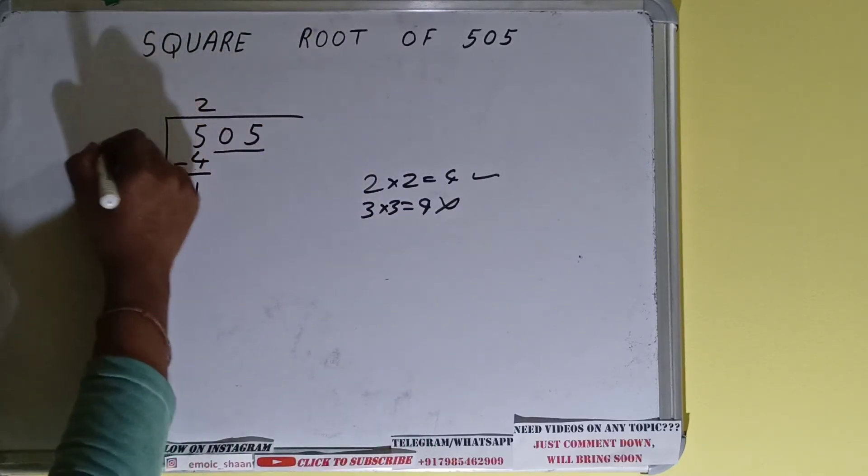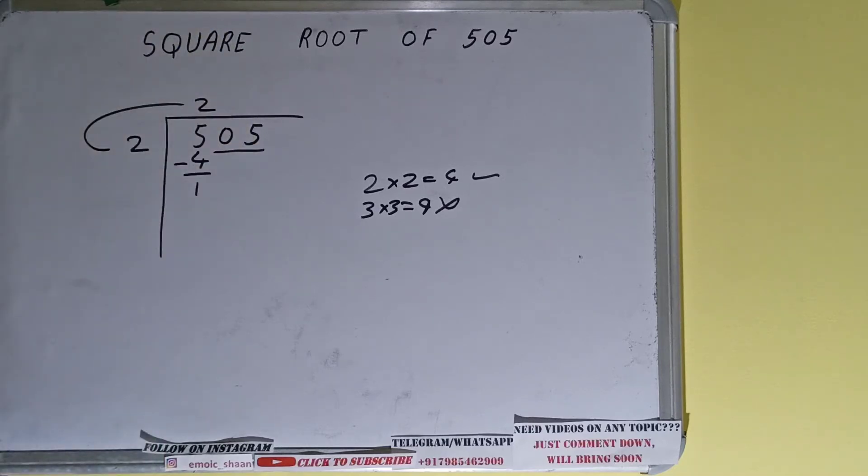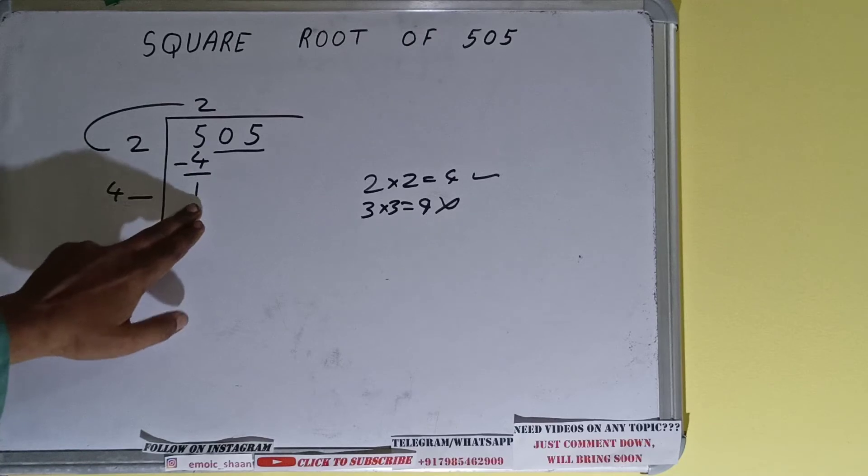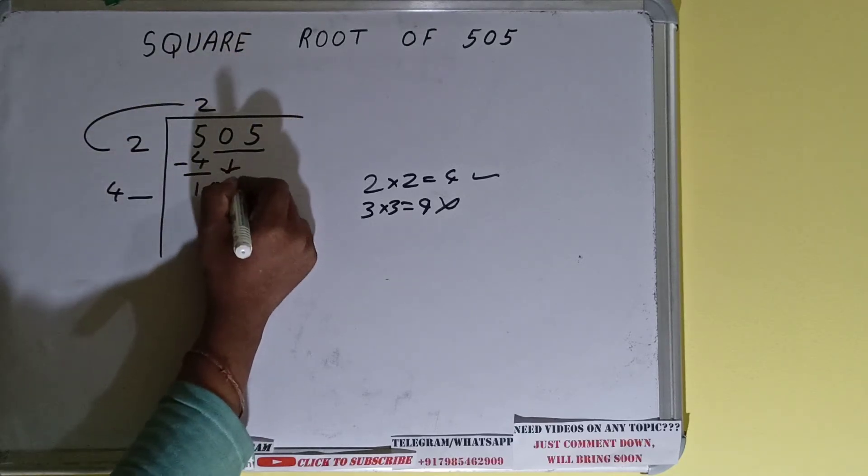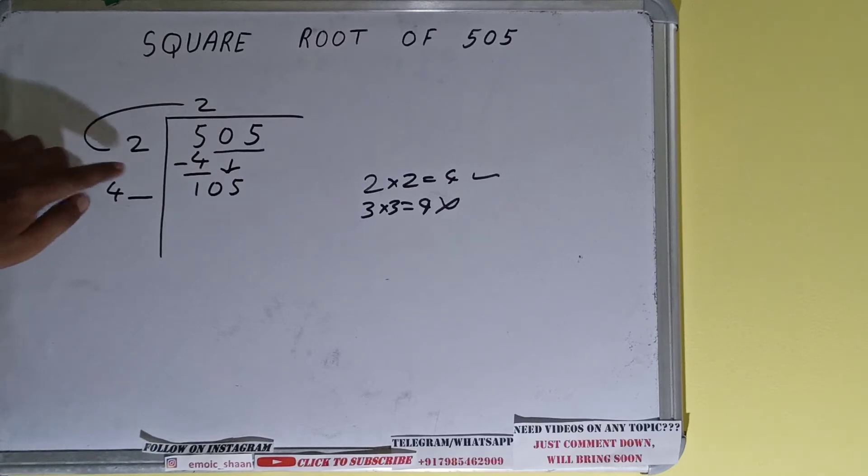Subtract and one will be left. Now we did two into two, right? So two plus two, it will be four, and keep one digit extra, and this number we need to make it big. So bring the next pair down and it will become as 105.